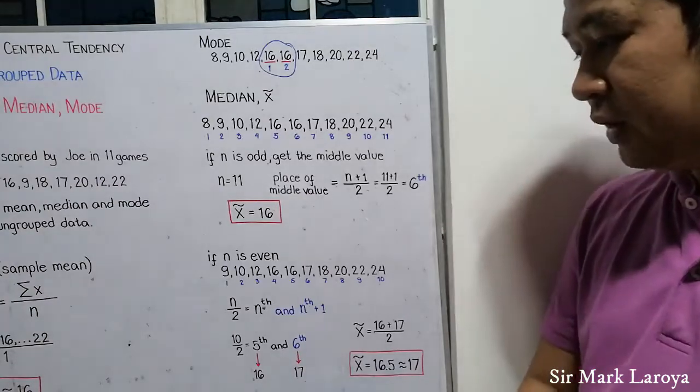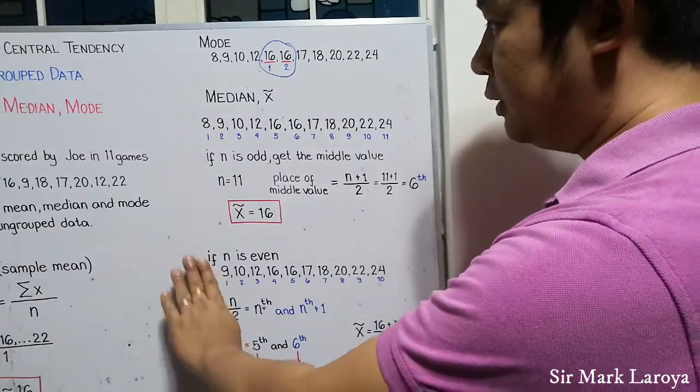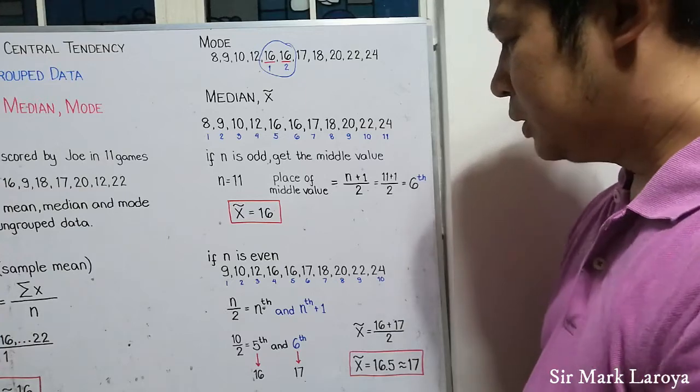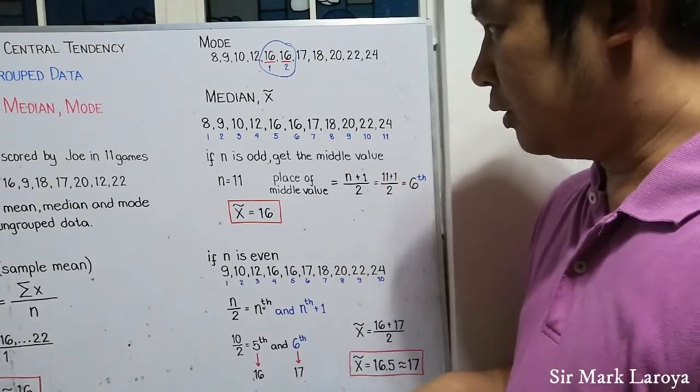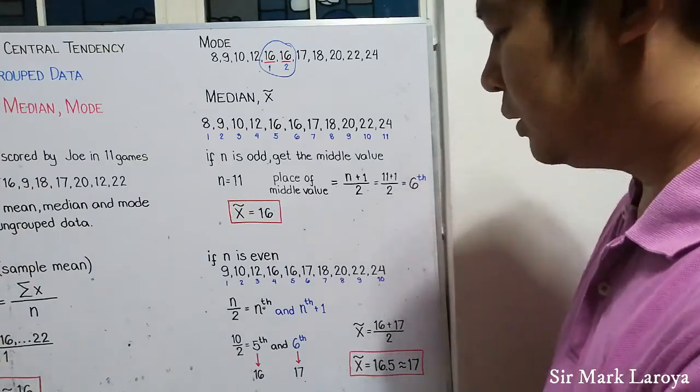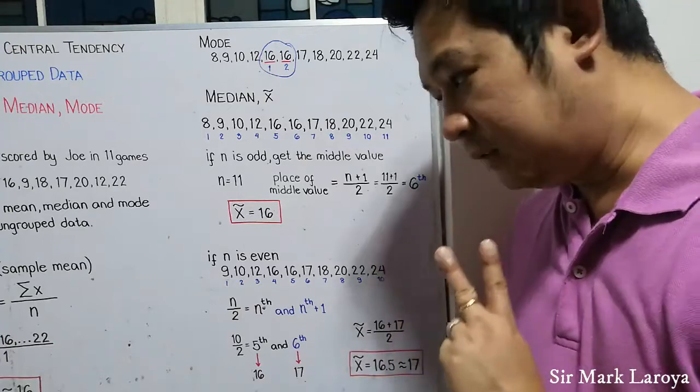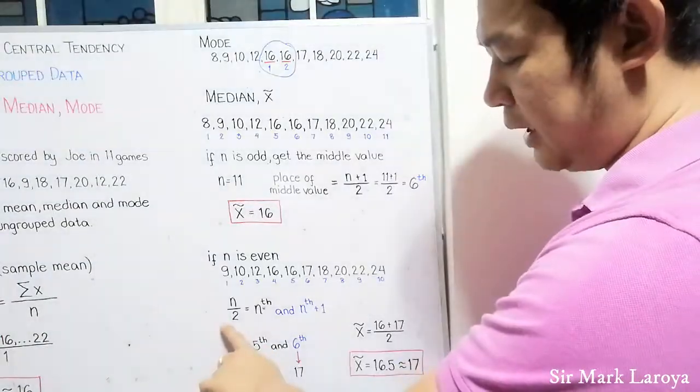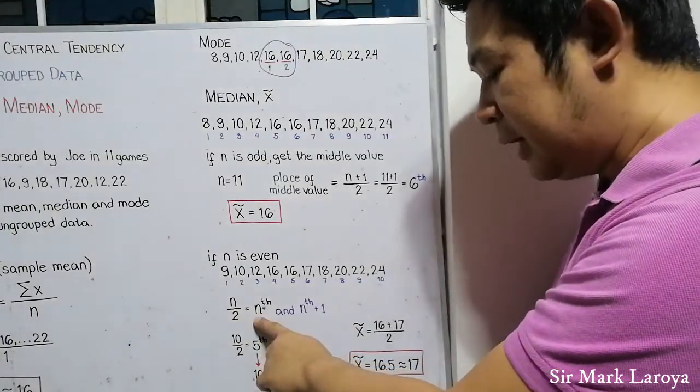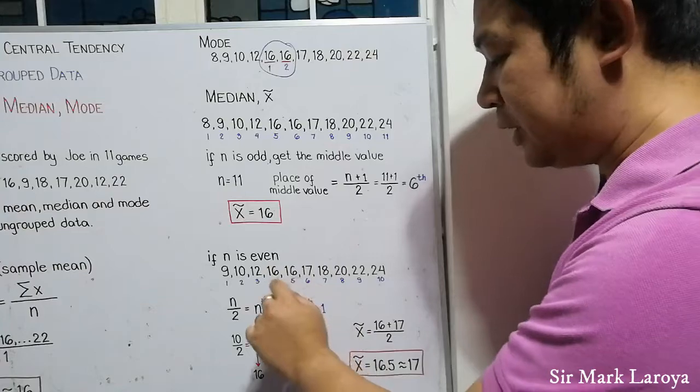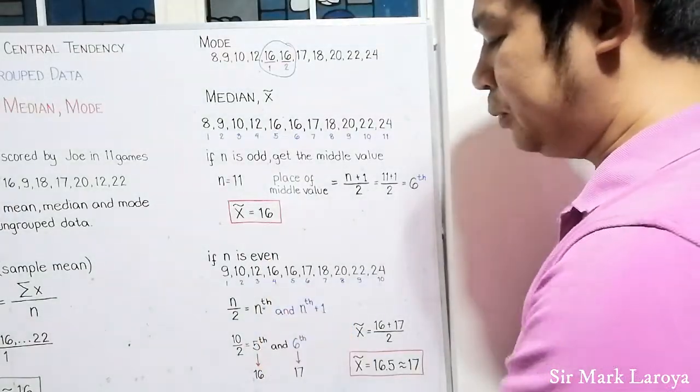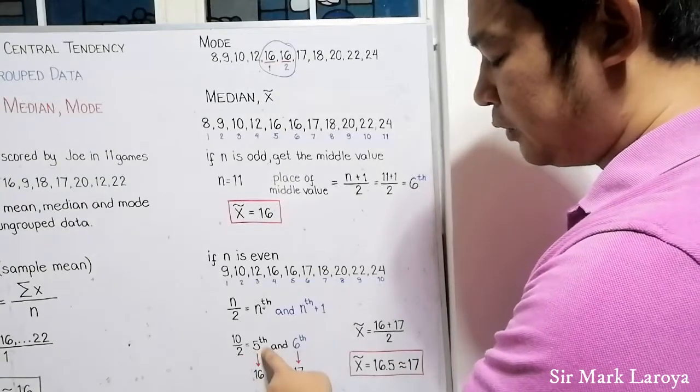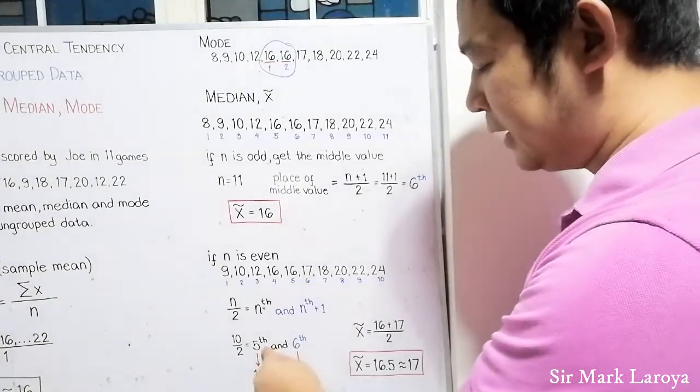Now, if n is even, let's say for example, we eliminate 8 just for the sake of example, we have a total of 10 values. To get the median of this set of values where n is even, we should get 2 middle values. To get the places or the place of the middle values, divide n by 2 and then you will get the place of the middle value and the other one is simply the next to its value or place. So, for example, we have 10 values. So, you have 10 divided by 2 that becomes 5 or the 5th value and then next to it is the 6th value.